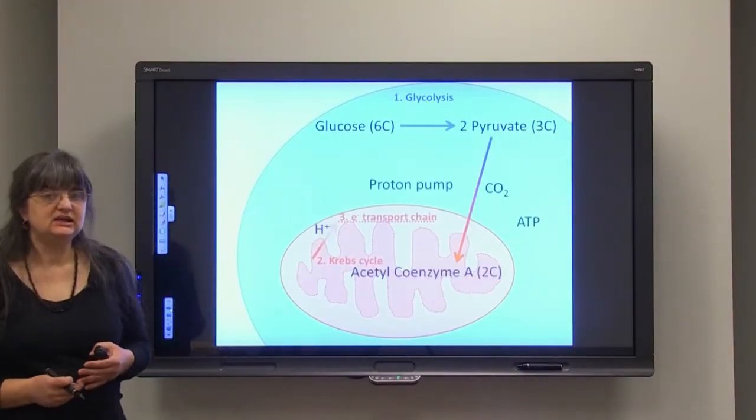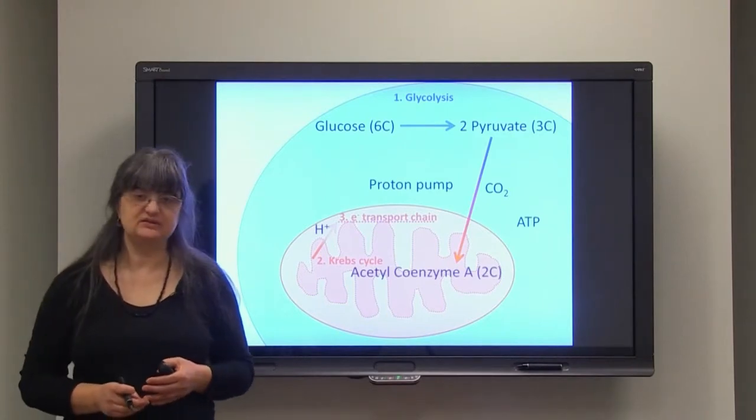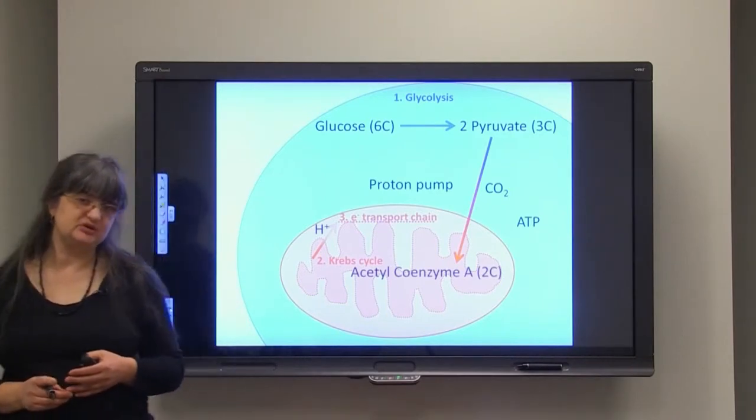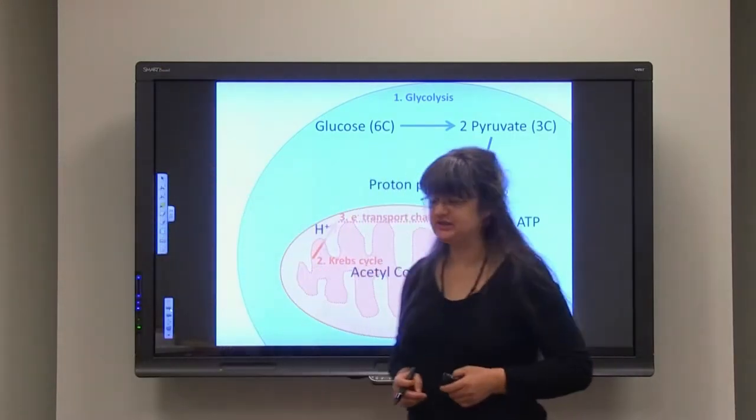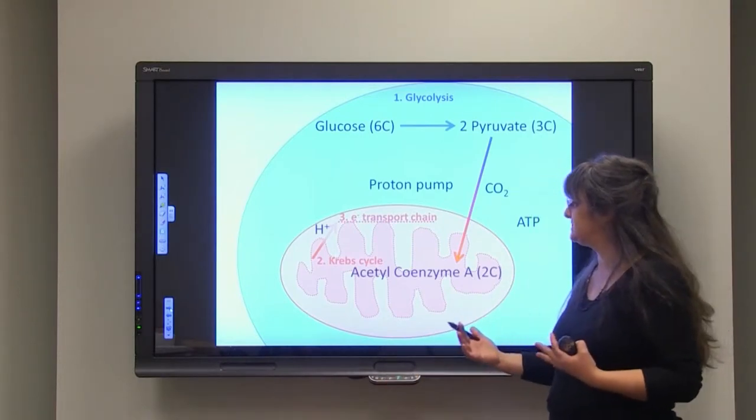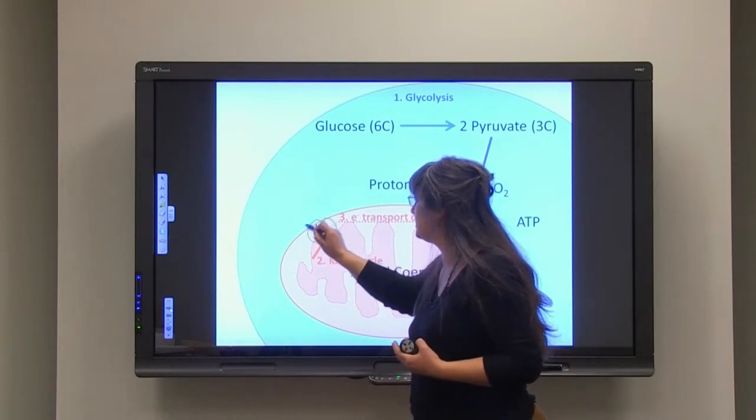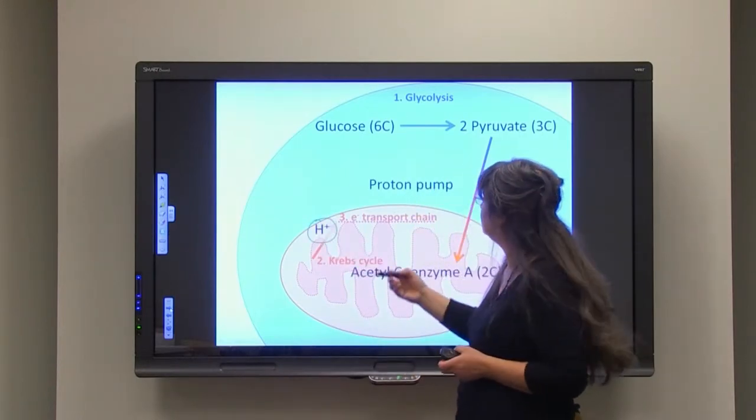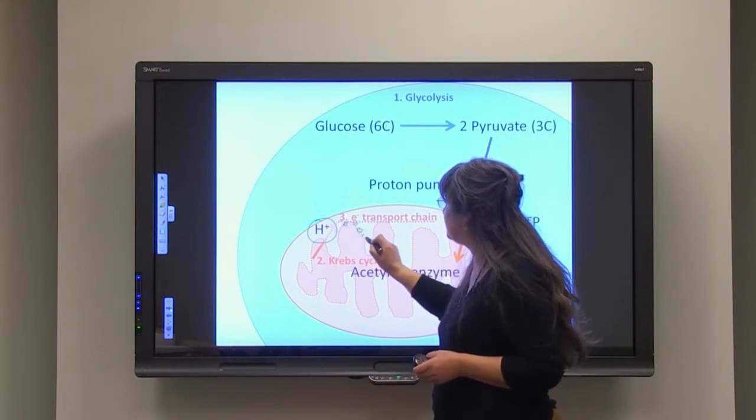The last but probably the most important part of cellular respiration is the electron transport chain or oxidative phosphorylation. All the energy that is released is actually utilizing protons. Here in the inner membrane of the mitochondria,